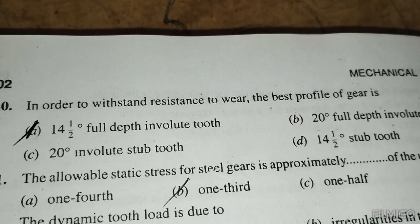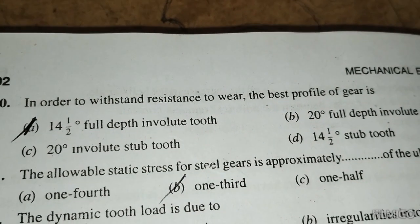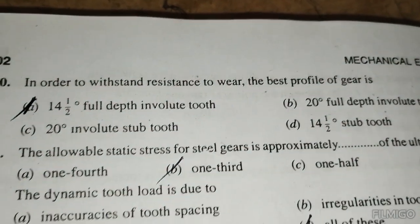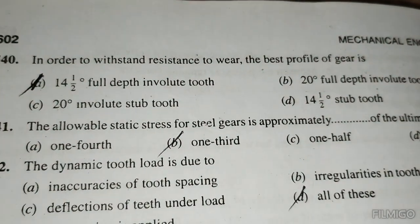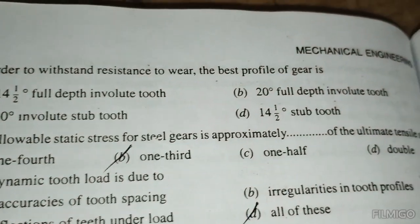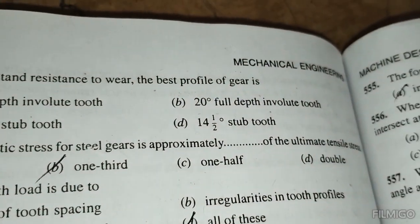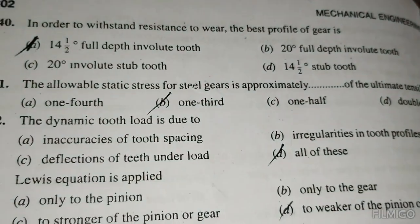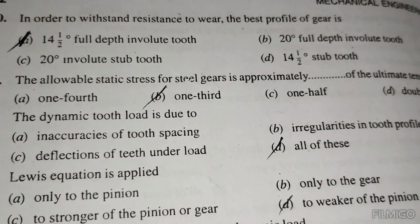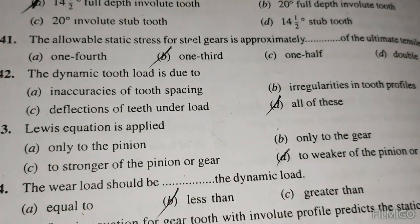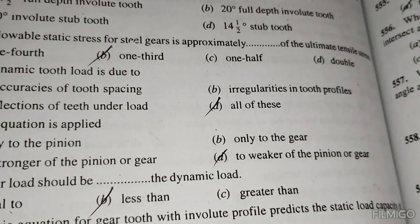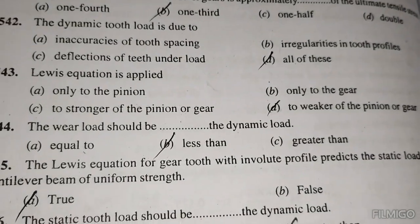In order to withstand resistance to wear, the best profile of gear is the 14.5-degree full depth involute tooth. The allowable static stress for steel gears is approximately one-third of the ultimate tensile stress. The dynamic tooth load is due to all factors combined. The Lewis equation is applied to the weaker of the pinion or gear.